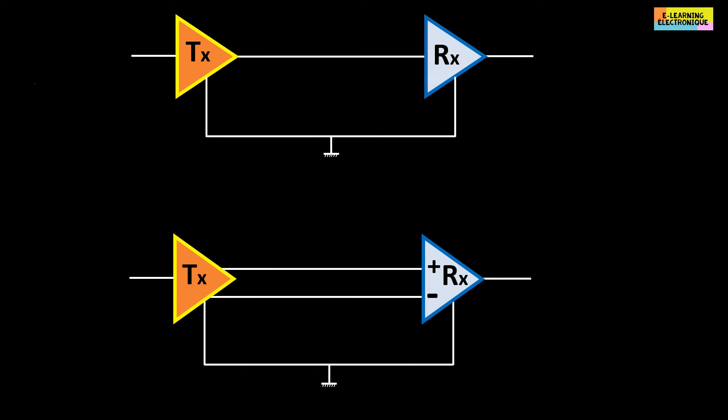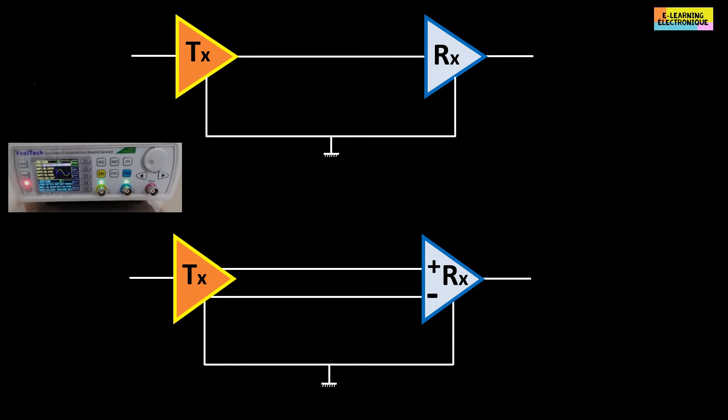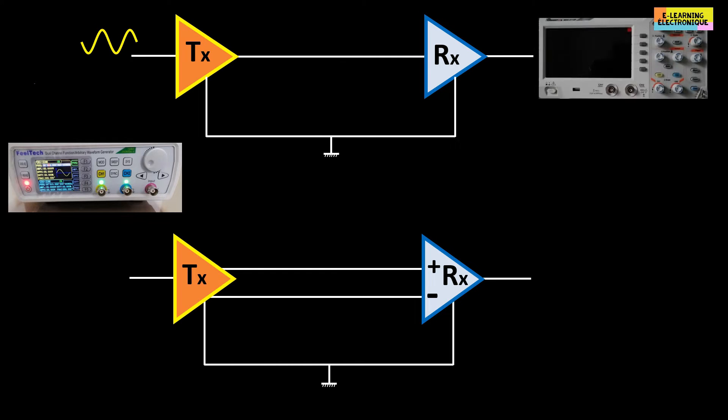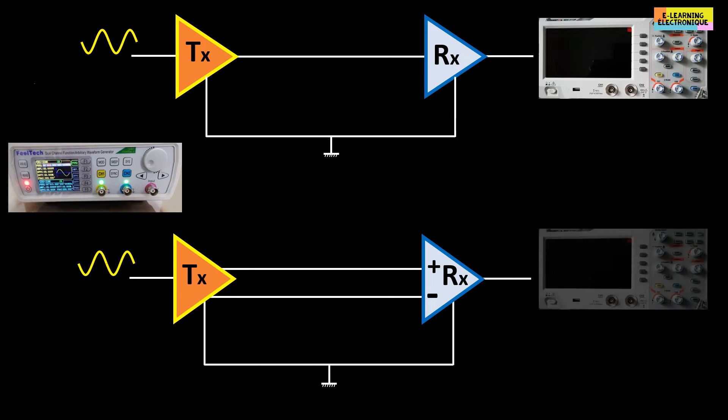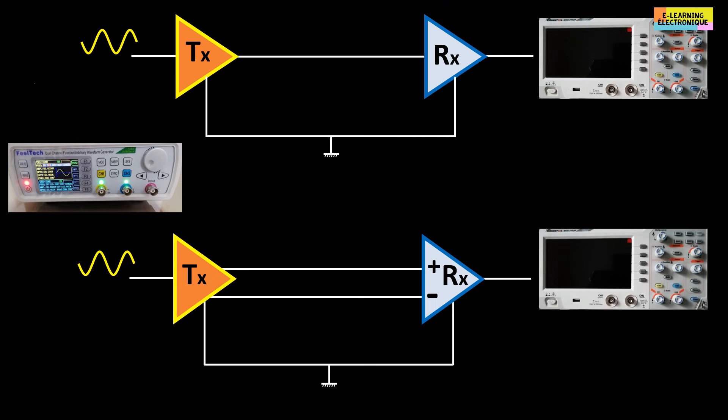To better illustrate the interest of a symmetrical link compared to an asymmetrical link, we will see two assemblies, one wired symmetrically and the other asymmetrically. The first assembly is made with a sinusoidal signal generator connected in an asymmetrical way to an oscilloscope placed at a few meters.